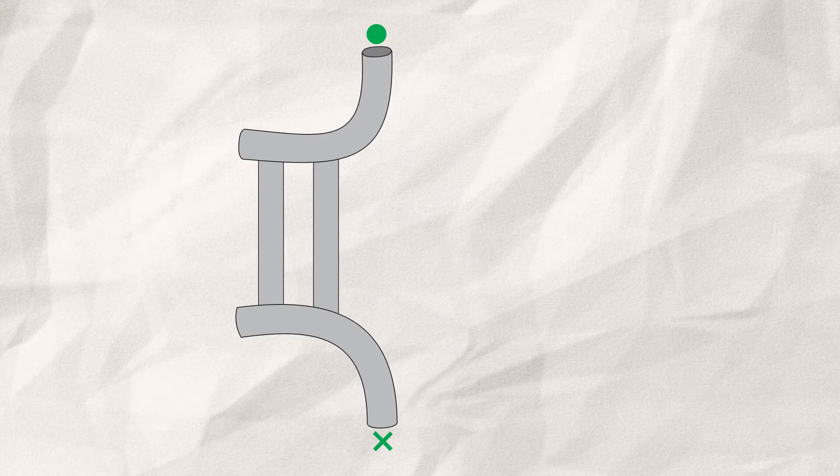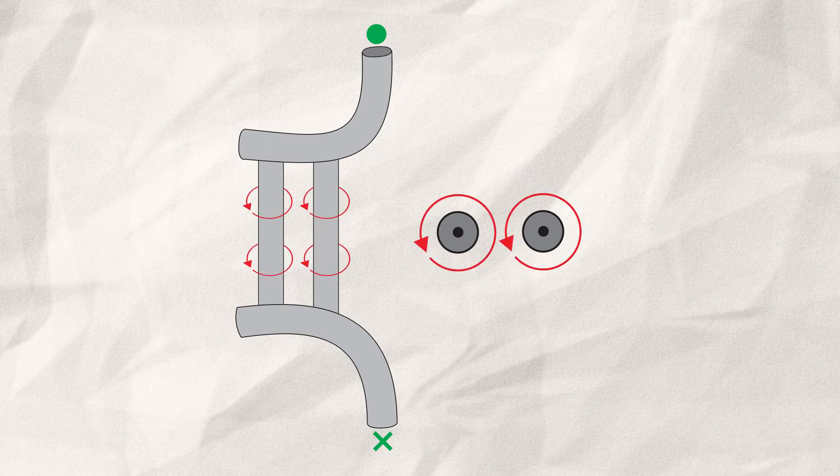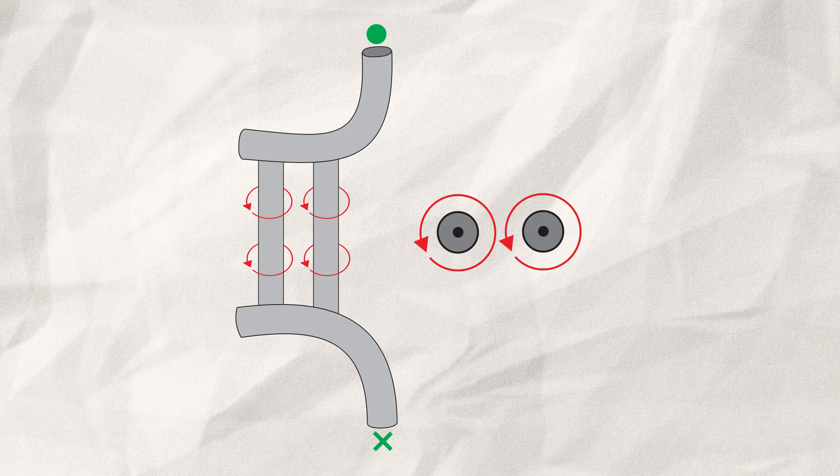If we change the connections a bit, so the electric current of both wires is flowing in the same direction, the layout of the flux lines changes. This time, both are counterclockwise, or simply, they flow in the same direction.